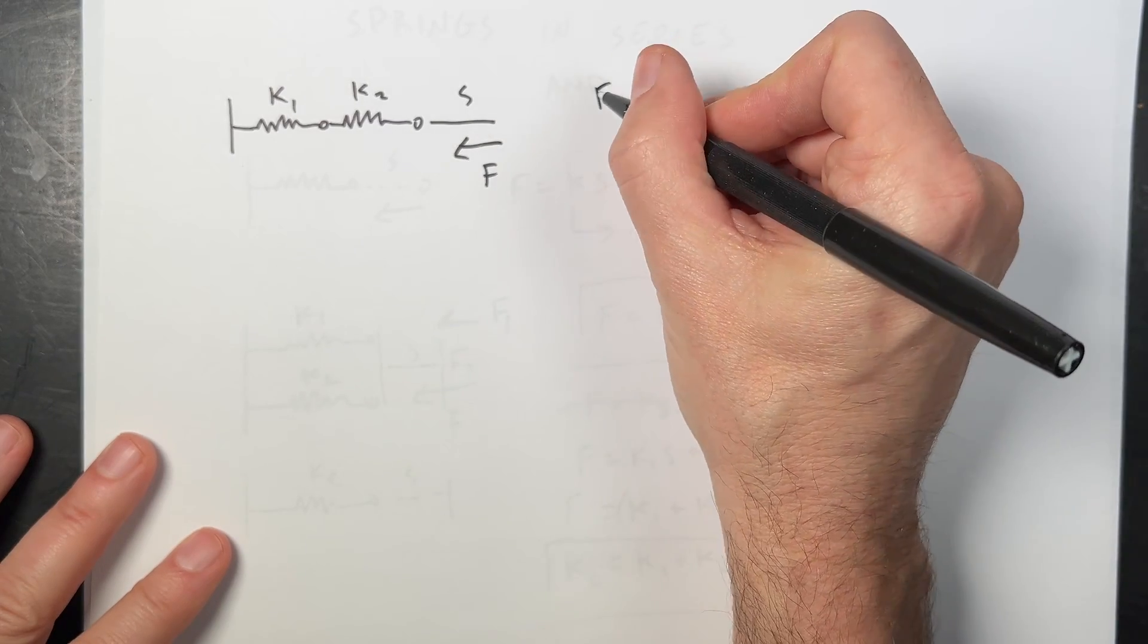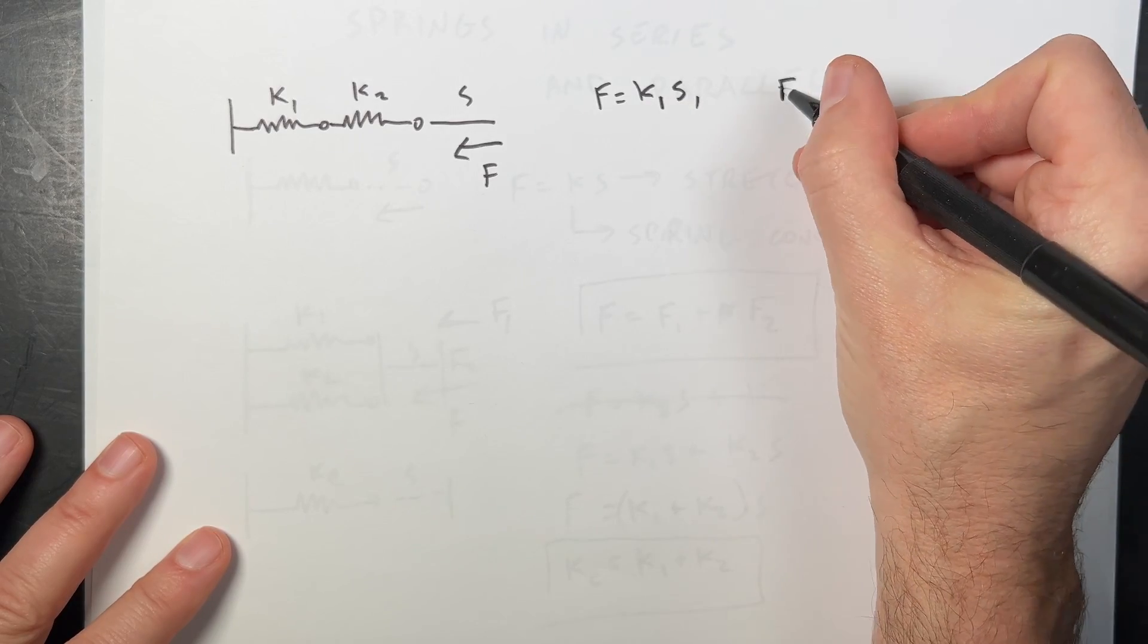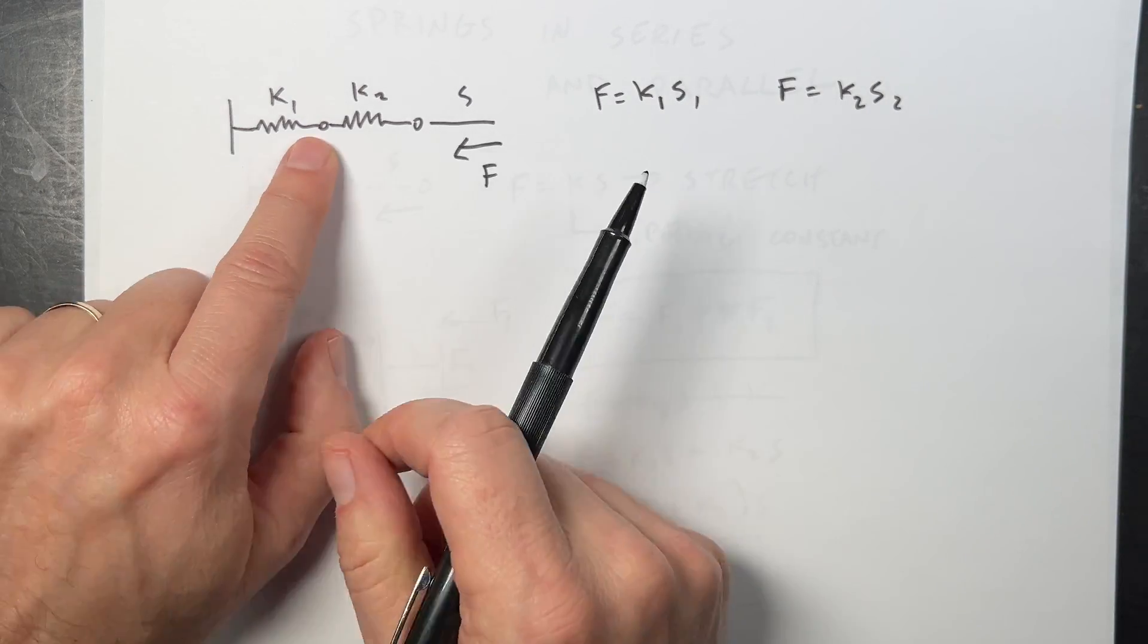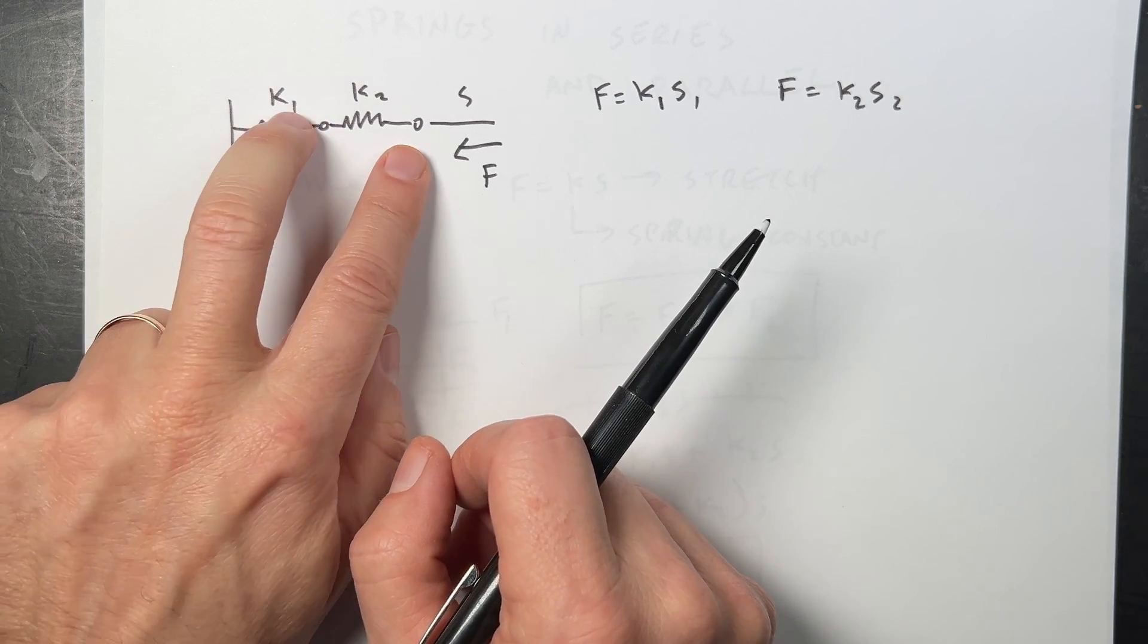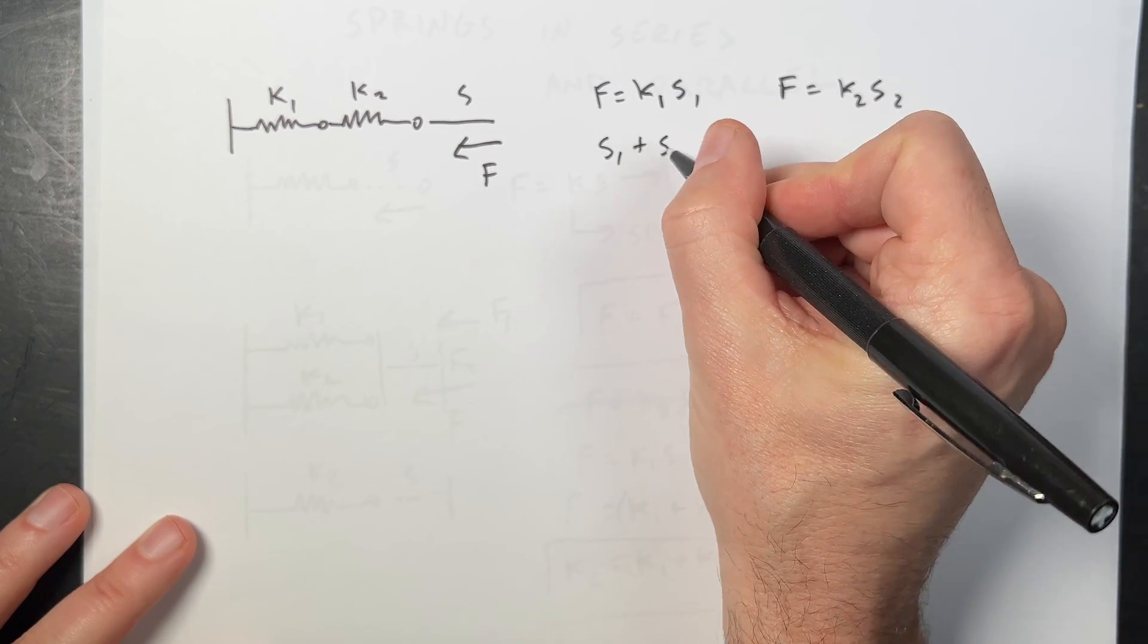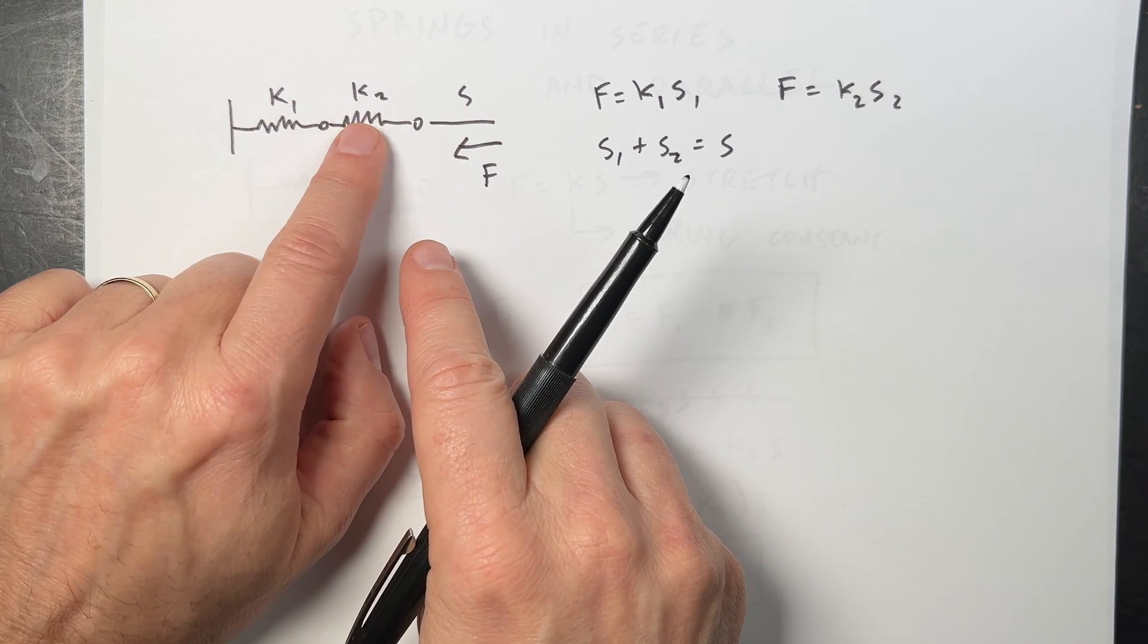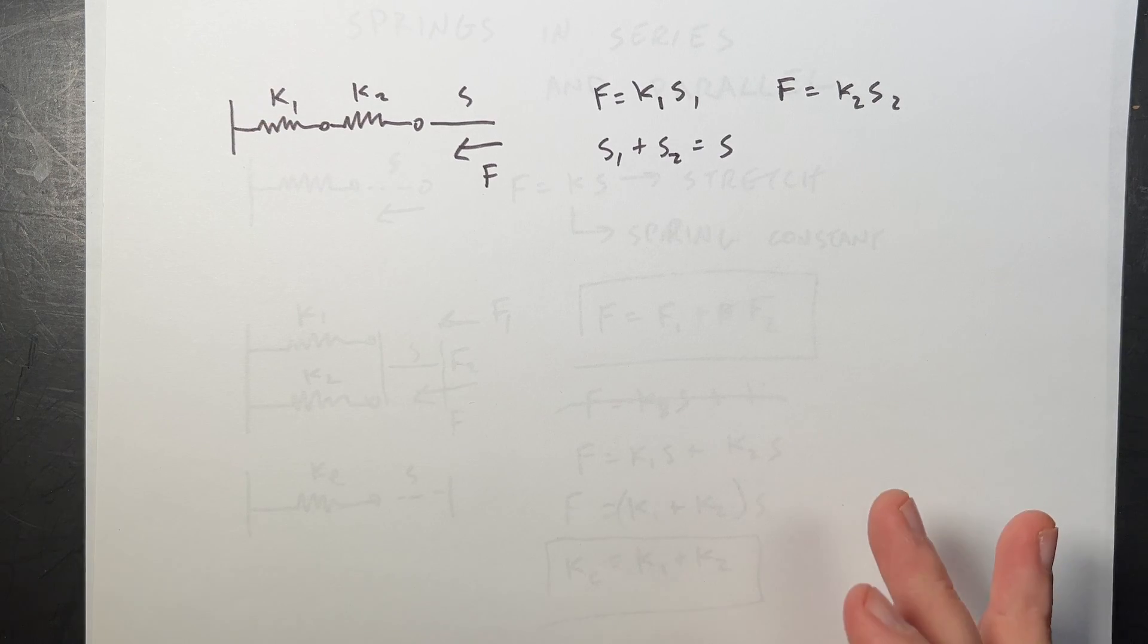So I can write this force F is equal to K1 times S1. And then F is also equal to K2 times S2. And you'll notice that they do not both stretch the same distance. If this stretches a little bit, this has stretched the rest of it. So the stretch, the sum of the stretches has to be the same. S1 plus S2 has to be equal to S. They don't have to be the same, but the total has to add up.